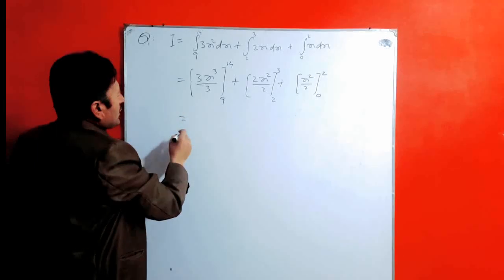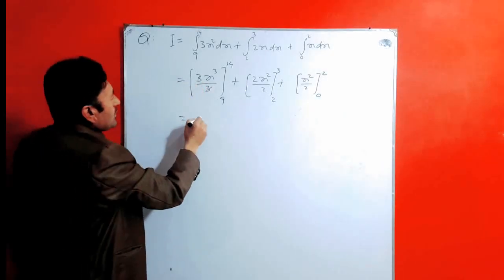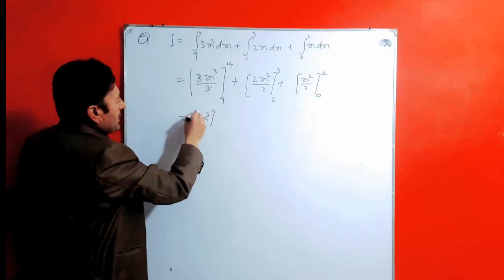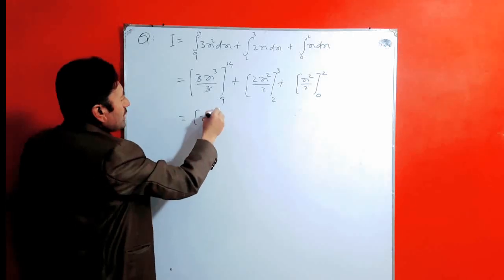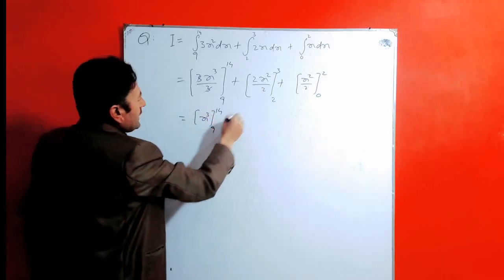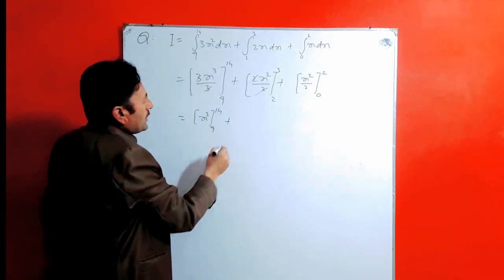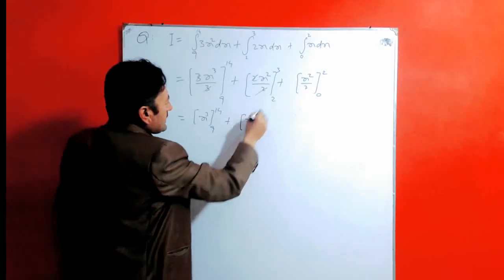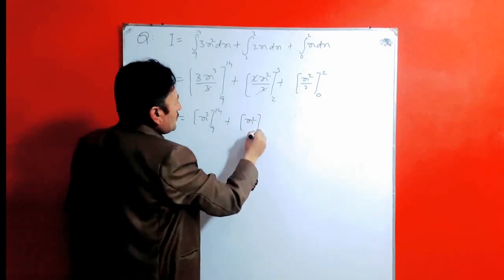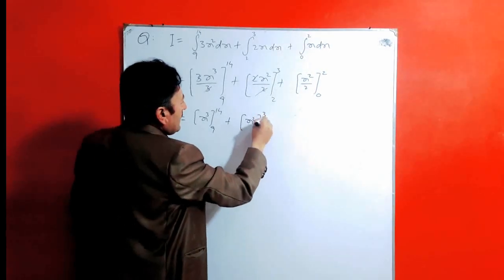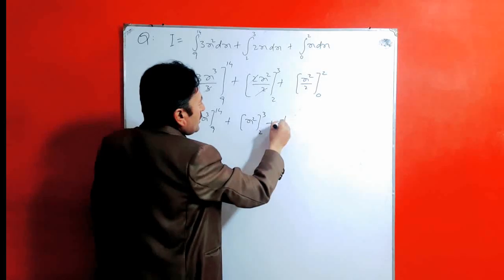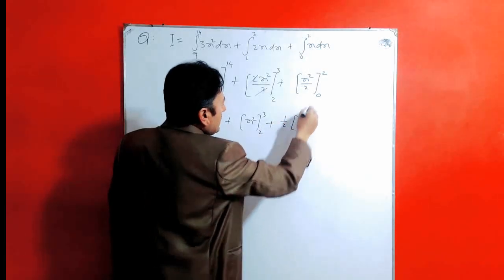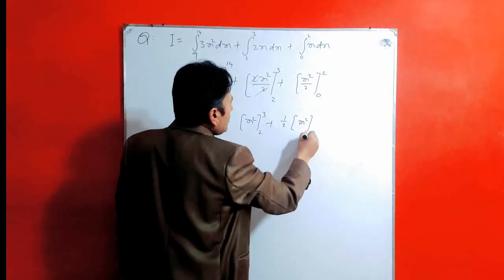The 3 will cancel with 3, so we will get x cubed, with its limit from 9 to 14. Then the 2 cancels with 2, so it will be x squared, with its limit from 2 to 3. And at the end, this is 1 over 2 into x squared, with its limit from 0 to 2.